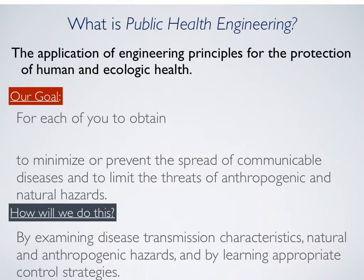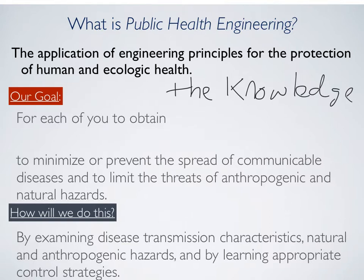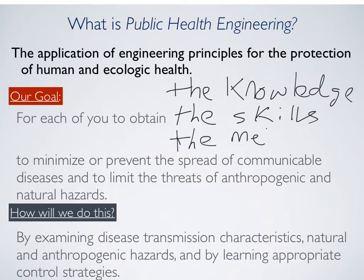With this particular set of videos, our goal is for every single one of you to obtain the knowledge, the skills, and the methodology to minimize and prevent the spread of communicable diseases and to ultimately limit the threats of anthropogenic and natural hazards. We're going to do this by examining disease transmission characteristics, natural and anthropogenic hazards, and learning atrophic control strategies. We're going to look at historical trends to understand how and why things occur — why a disease is appearing now when it hasn't appeared in the past — and then think about how that relates to current events and extrapolate ultimately to the future.